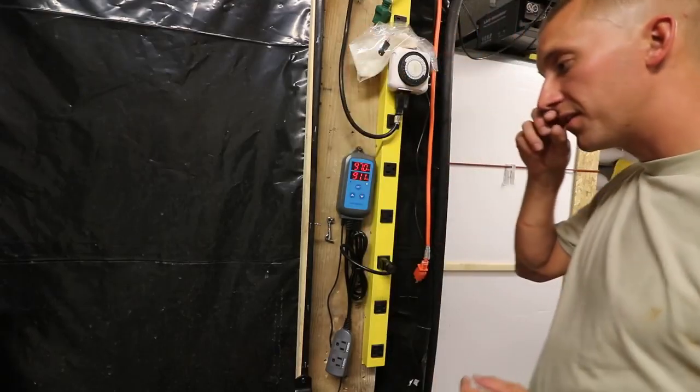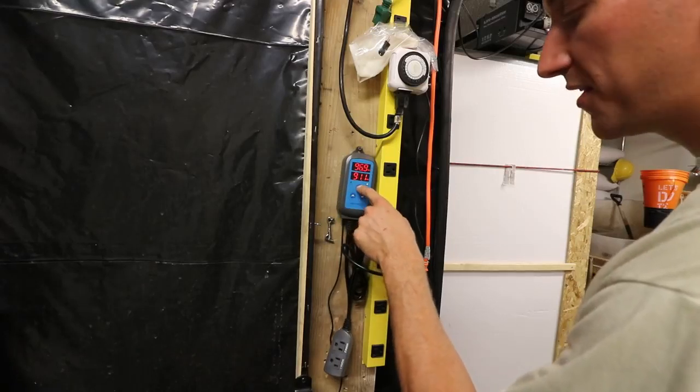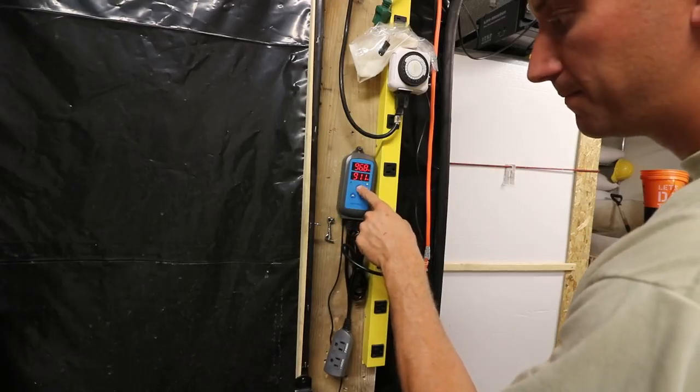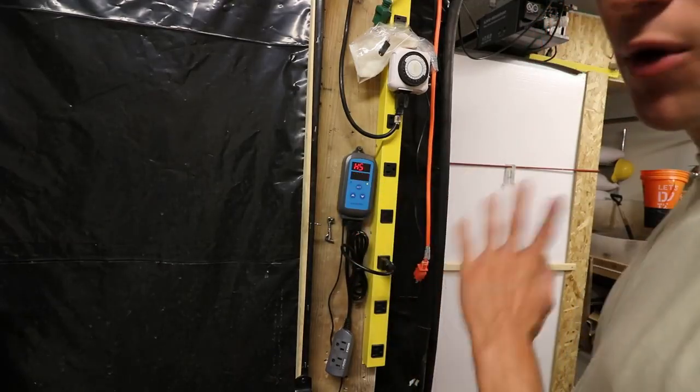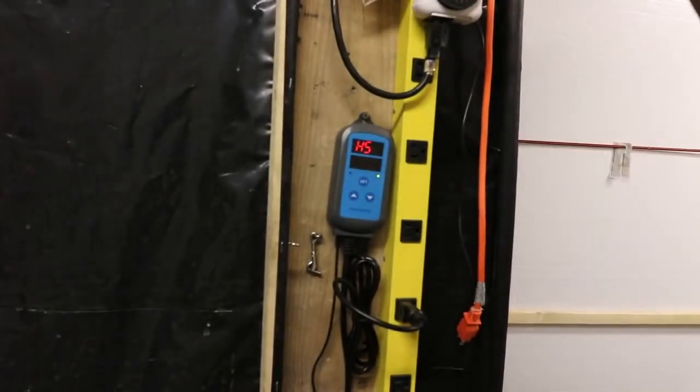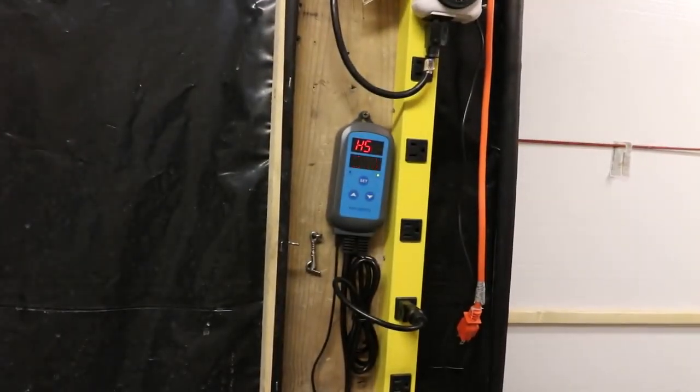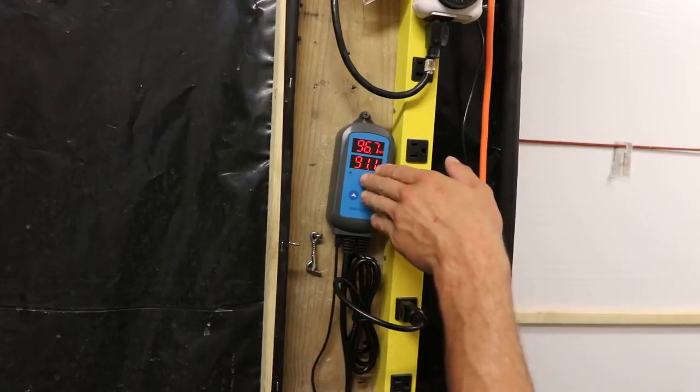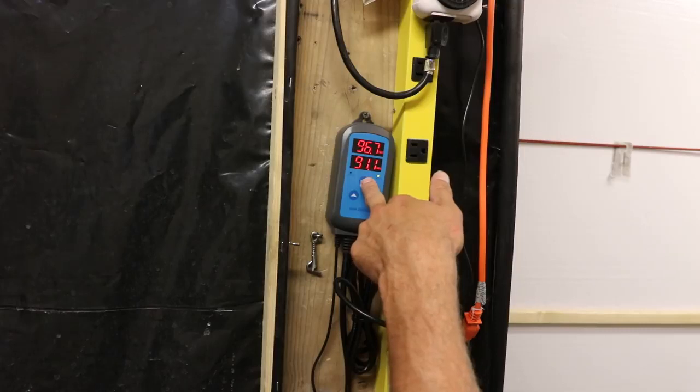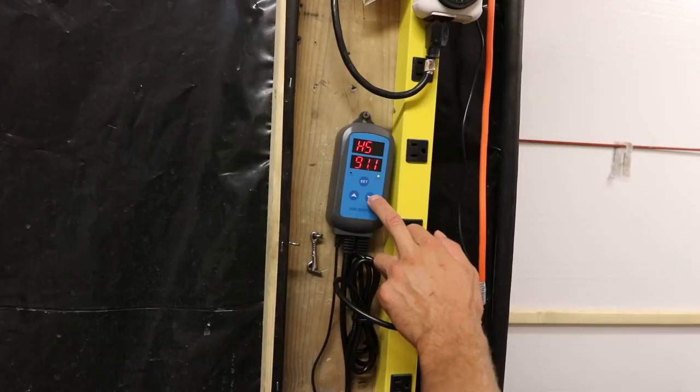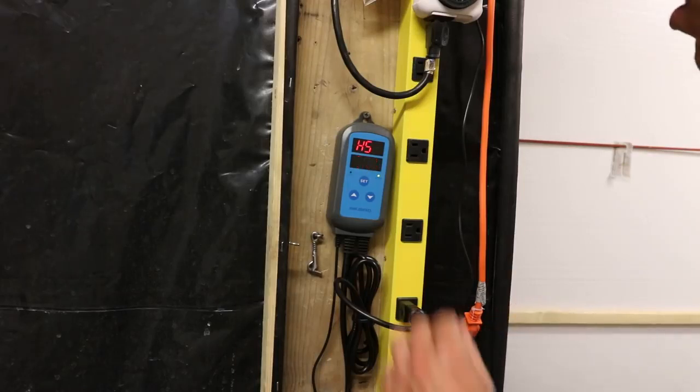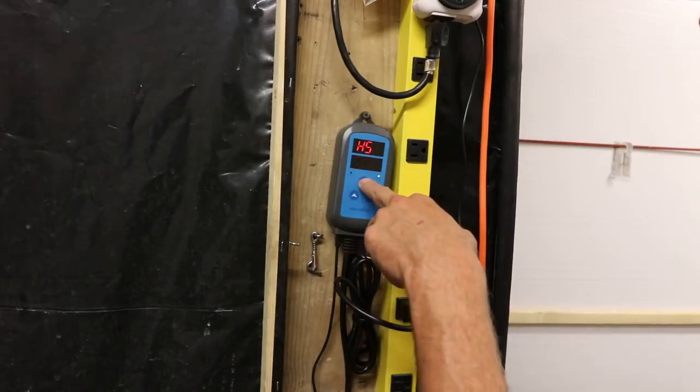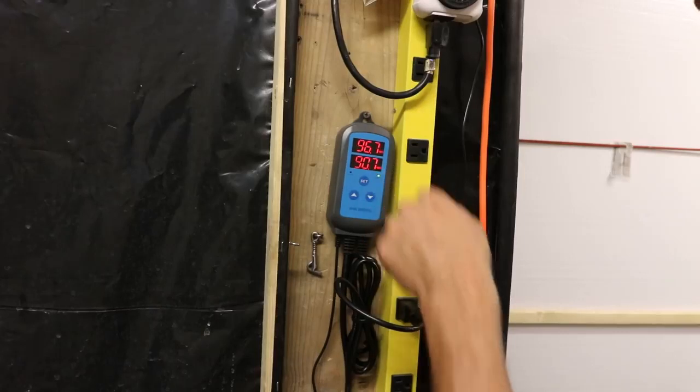So we're going to go ahead and go into the settings. We're going to hold the set button and it'll go into the program. Right now, HS - that's the humidity set point. So we're going to set it at 91. I want to point out that any time you're doing settings on this, you want to hold the set button to save it. If you don't hold the set button, then nothing happens. It just goes back to the old setting. So you got to hold the set button and then it keeps the changes.